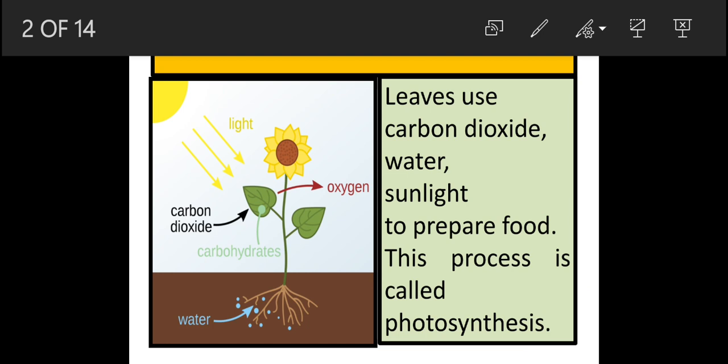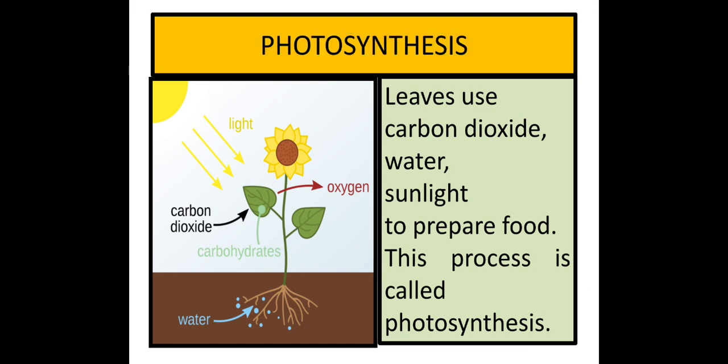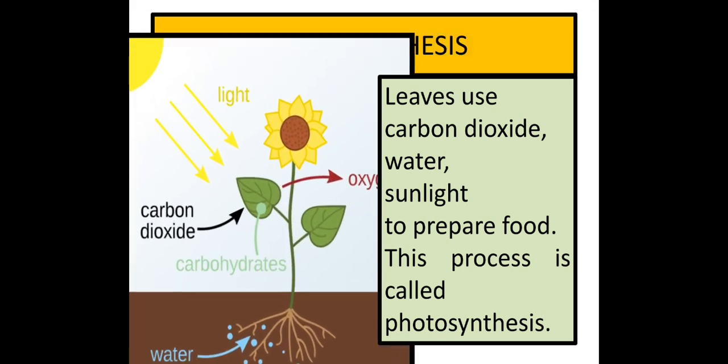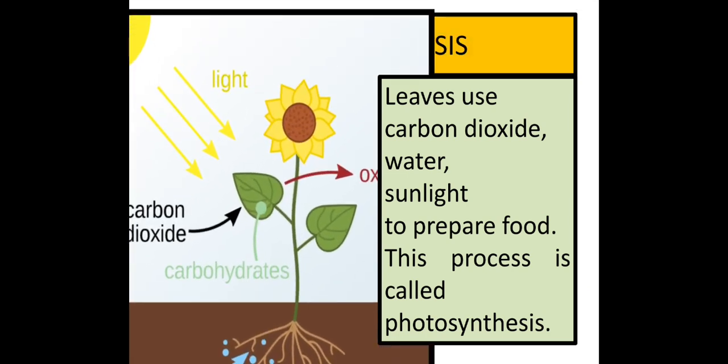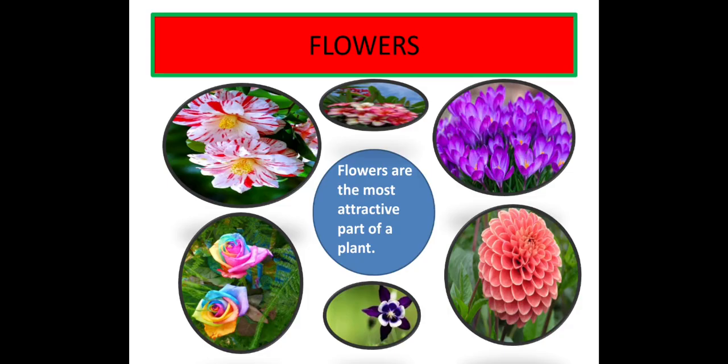Which is the most attractive part of a plant? Most attractive part of a plant kya dikhta hai? Yes, flowers. Flowers are the most attractive part of a plant. A plant looks beautiful, surroundings look beautiful because of the flowers.